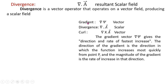In the previous lecture we have learned the gradient operation. When the vector differential operator del operates on a scalar function, the resultant is a vector. The resultant del psi is called the gradient of a scalar function. This gradient vector del psi gives the direction and the rate of fastest increase — the direction in which the function increases most quickly from point P — and the magnitude of the gradient del psi is the rate of increase in that direction.